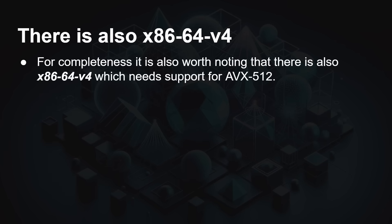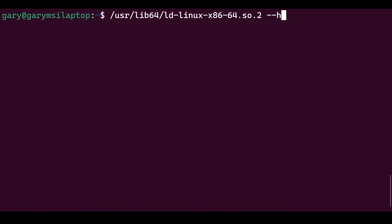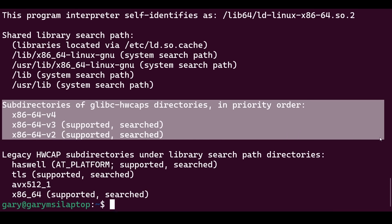There is also an x86-64v4, worth mentioning for completeness, which adds AVX-512. If you want to test what level your CPU supports, you can use a tool called x86-64-level, available on GitHub. It's a shell script that looks at /proc/cpuinfo and tells you about your CPU. Alternatively, you can run the dynamic linker — for example on Ubuntu: /usr/lib64/ld-linux-x86-64.so.2 --help — and it will give you a listing showing whether your CPU supports v2, v3, and v4.